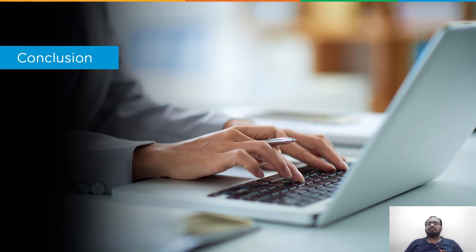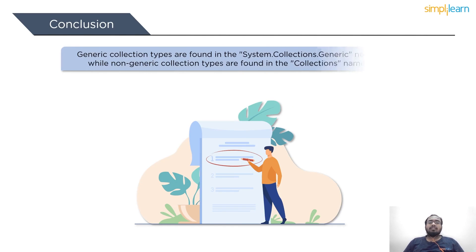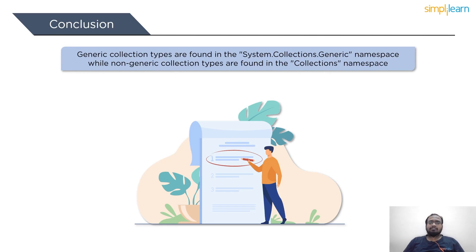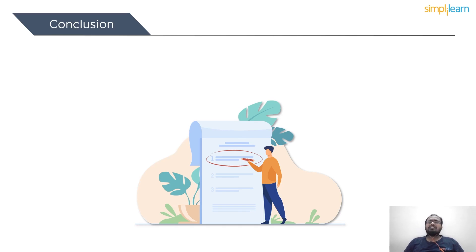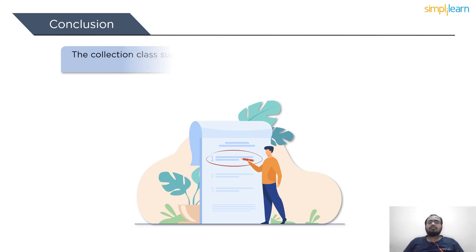Finally, let's conclude this session with some pointers on collections. In most circumstances it is preferable to utilize generic collections since they operate quicker than non-generic collections and help reduce exceptions by displaying a compile-time error. Non-generic collection types are found in system.collections, while generic collections are found in system.collections.generic. C-sharp also has specialized collections to deal with a specific sort of data type, found in system.collections.specialized. The collection class supports null as a valid reference type value and enables duplicate elements.